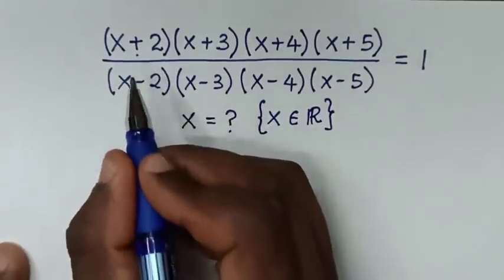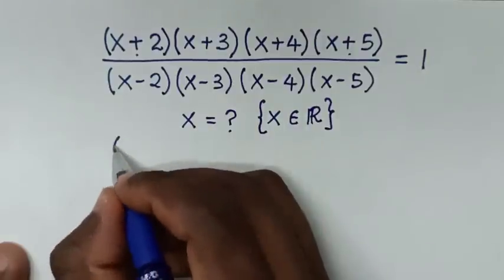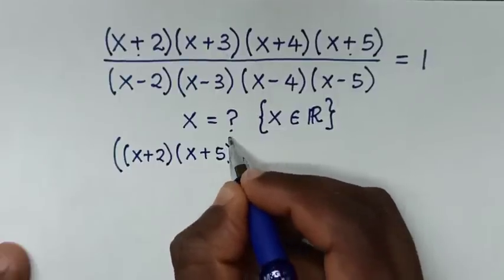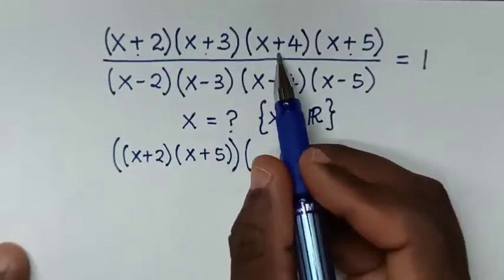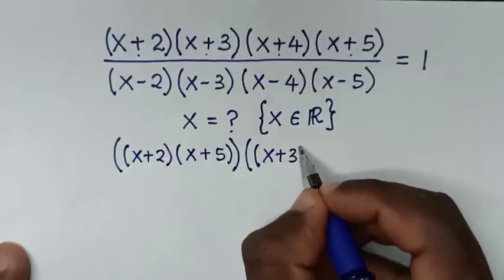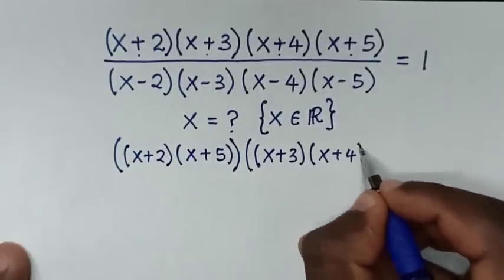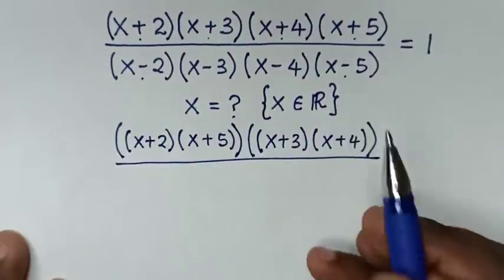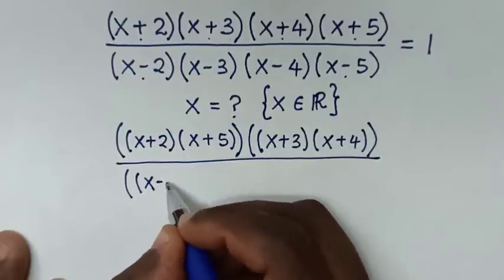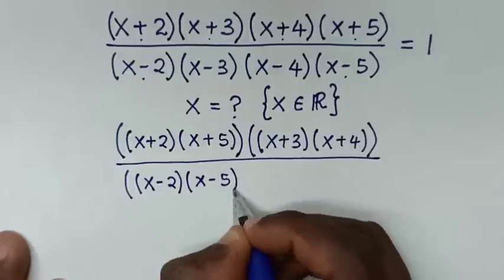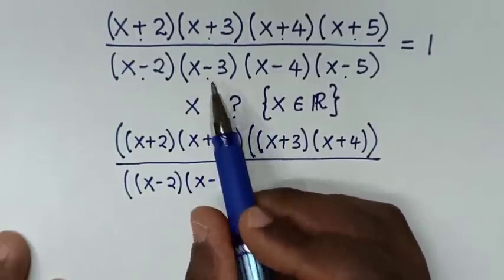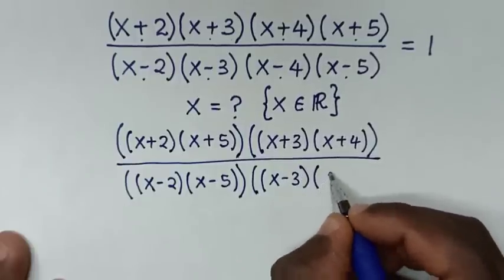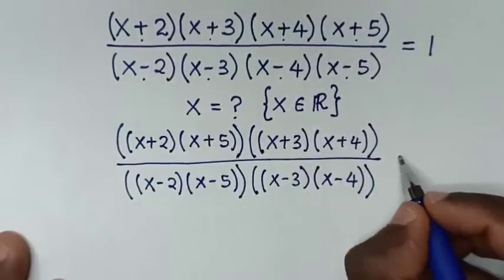First, we start by multiplying (x+2)(x+5), then times (x+3)(x+4), over (x-2)(x-5), then times (x-3)(x-4), and that is equal to 1.